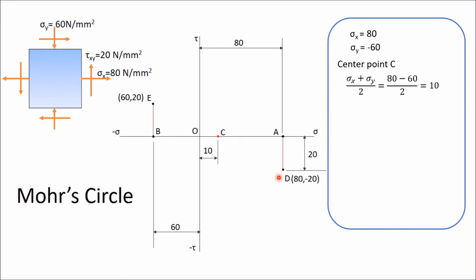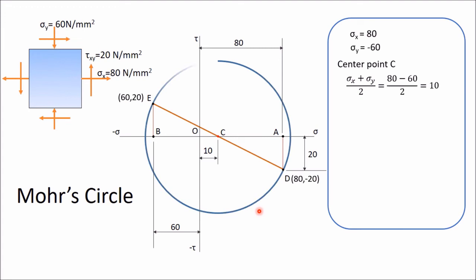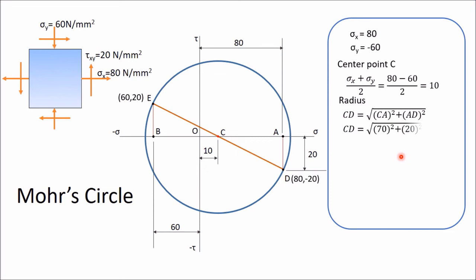Join E with D — the line will pass through center C. With C as center and CD as radius, draw the Mohr circle. To determine the radius CD from right-angle triangle CAD: CA = OA − OC = 80 − 10 = 70, and AD = 20. So CD = √(70² + 20²) = √(4900 + 400) = 72.8 N/mm². The radius of the Mohr circle is 72.8.